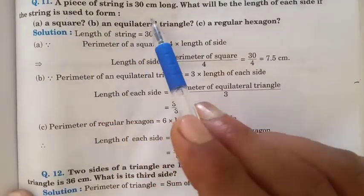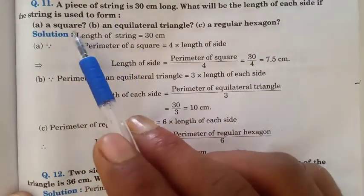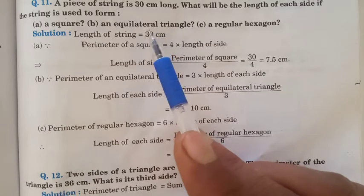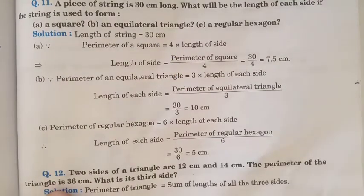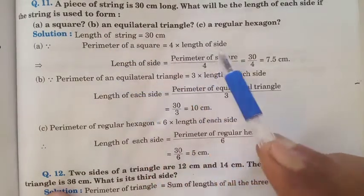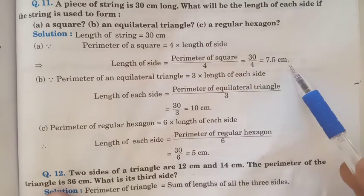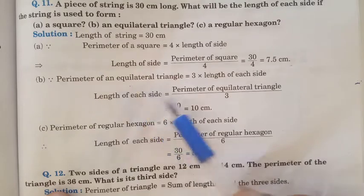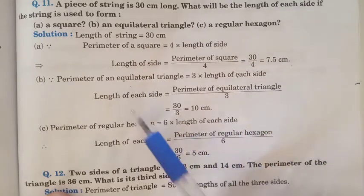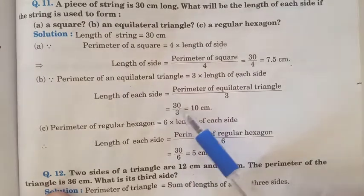A piece of string is 30 cm long. What will be the length of each side if the string is used to form a square? The string length is 30 cm, which equals the perimeter. Perimeter of square = 4 into side, so side = 30 divided by 4 = 7.5 cm. If used to form an equilateral triangle: perimeter = 3 into side, so side = 30 divided by 3 = 10 cm.